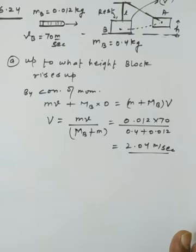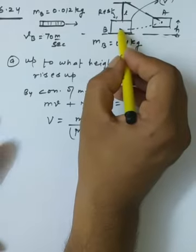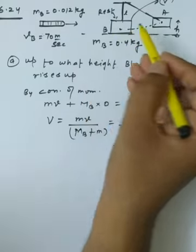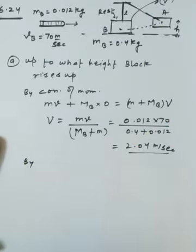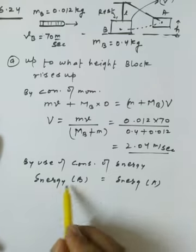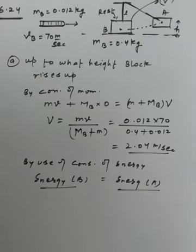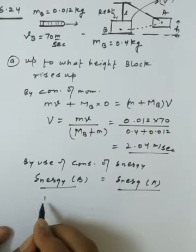Solving gives V_final ≈ 2.04 m/s. This is the common velocity of the bullet-block system after collision. Now we apply conservation of energy to find the height risen.